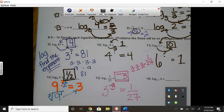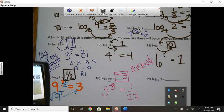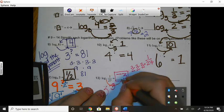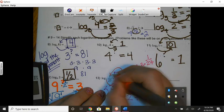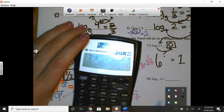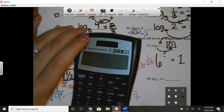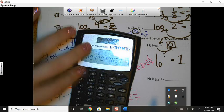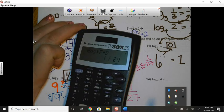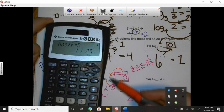And then again, we can check it. So if we make the circle, 3 to the negative third power should equal 1 over 27. So let's check it. 3 to the negative third power, and then we could change it to a fraction, since it's in fraction form, and it is 1 over 27.